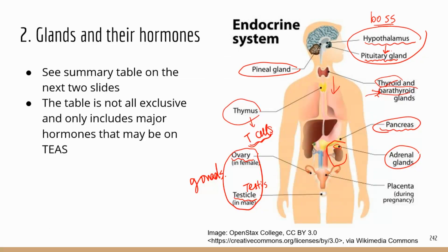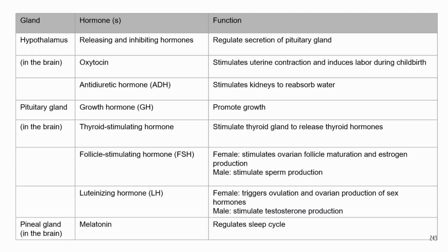The summary tables I made list only the important hormones that may appear on the TEAS. Now, all glands in this section of the table are located in the brain. The hypothalamus regulates the activity of the pituitary gland by producing releasing or inhibiting hormones. Releasing hormones stimulate the pituitary gland to secrete hormones, and inhibiting hormones do the opposite — they inhibit the pituitary gland from secreting hormones.